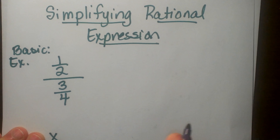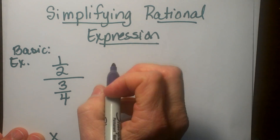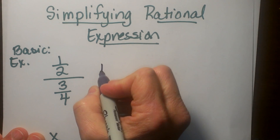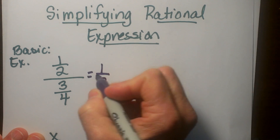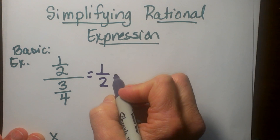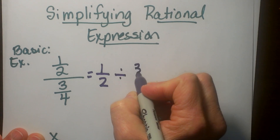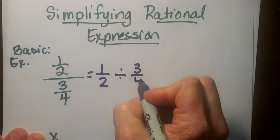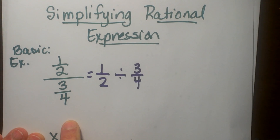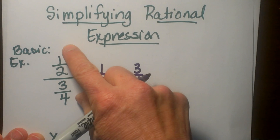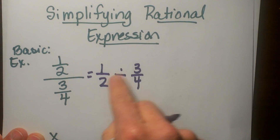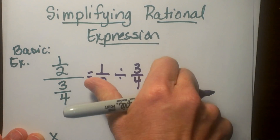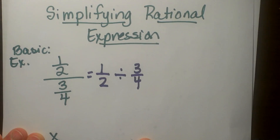So I am going to rewrite this as one half divided by three fourths. So that is really what this means — you have a fraction divided by another fraction, so I have written it from a double stack to long ways.